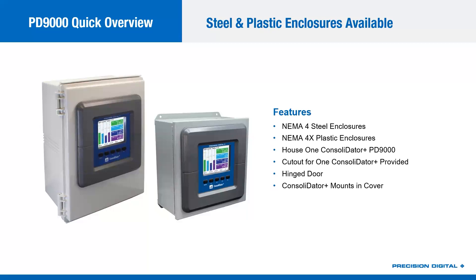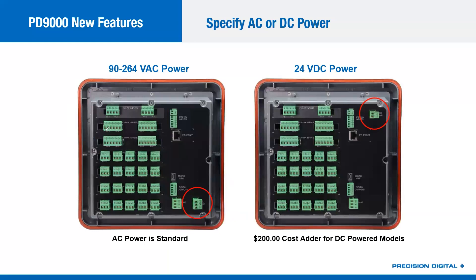Jim is asking whether analog outputs can be active or passive — yes, that is totally correct. The analog outputs on the Consolidator can be either active or passive. If you already have a powered output from your transmitter, you connect up to the milliamp plus and milliamp minus terminals. If you need power for your transmitter, you connect up to the 24-volt pin and milliamp minus. It's just a matter of how you wire the consolidator — it can take either passive or active analog inputs.